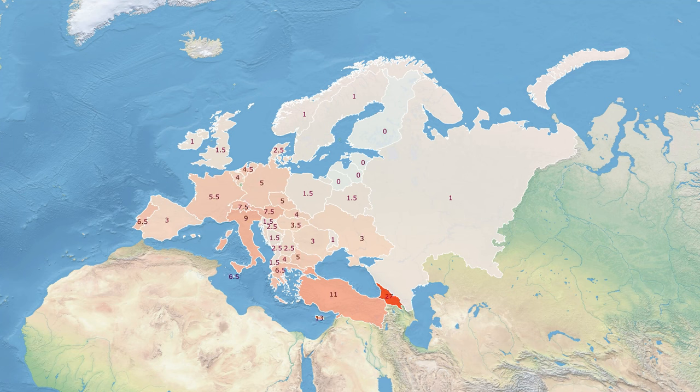Based on data from Eupedia, let's plot the distribution of the average Haplogroup G in each European country on a map. Haplogroup G has an average high frequency in the populations of Switzerland, Austria, Italy, Turkey, Cyprus, and Georgia.